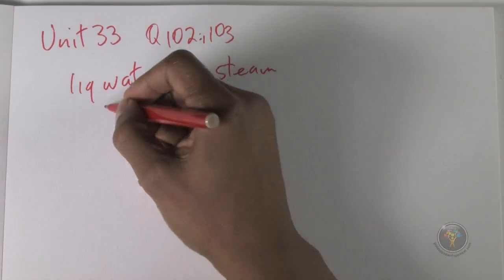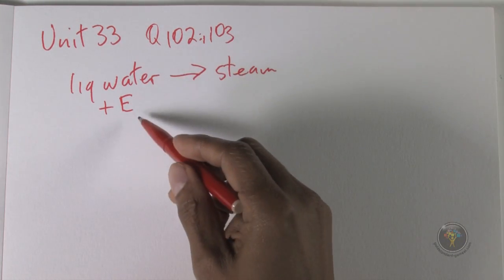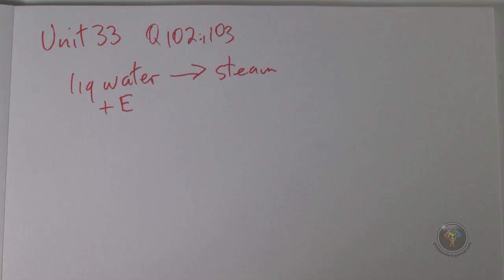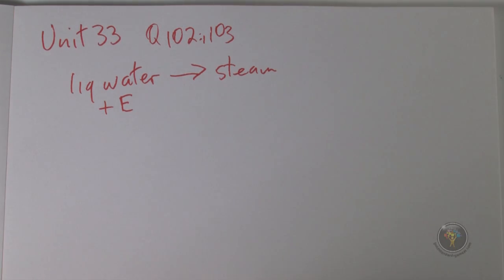So liquid water plus energy leads to steam. And of course, liquid water is more organized than steam, which has entropy, which means tendency towards randomness because molecules are bouncing off of walls and so on.